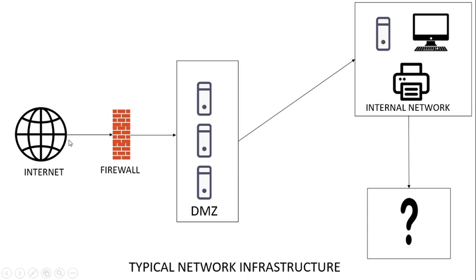There are many ways to attack an organization. Like I mentioned, if it's the website you are interested in, you go through a different approach. One approach an attacker could take is to start with the public-facing servers and build his way all the way through to the internal network. That can be a little time-consuming, a little complex, and you might not even get the results you are looking for — but it's still doable. Another approach, which is actually one of the most effective ways, is phishing.